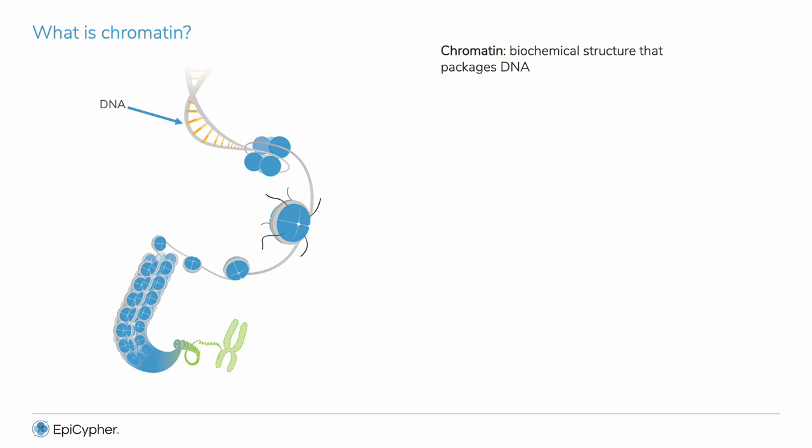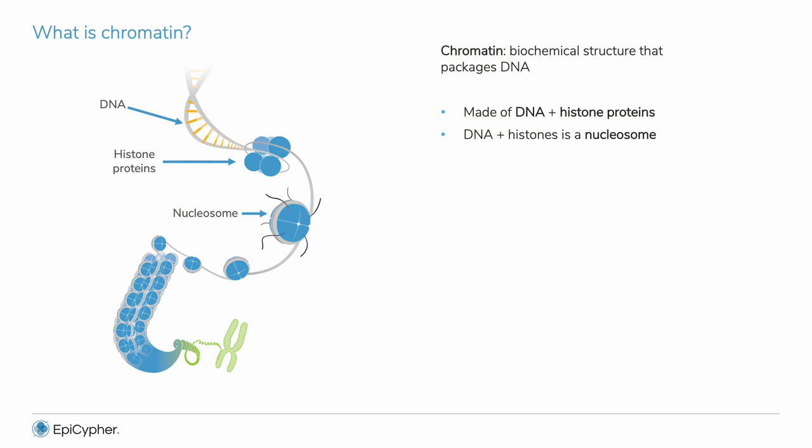Let's review some basic chromatin biology. Chromatin is the biochemical structure that packages approximately 2 meters of DNA inside cells. The main components are DNA and histone proteins. DNA wraps around a set of histone proteins to form a nucleosome, the repeating subunit of chromatin.